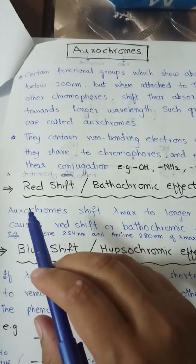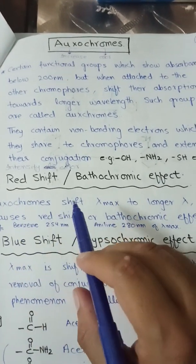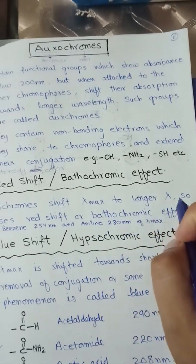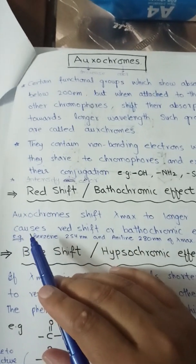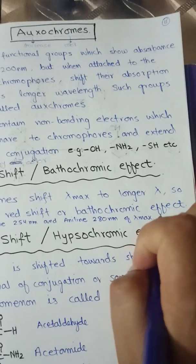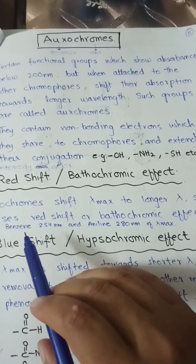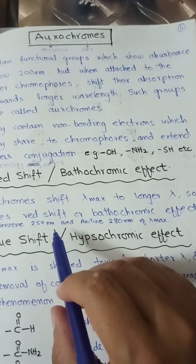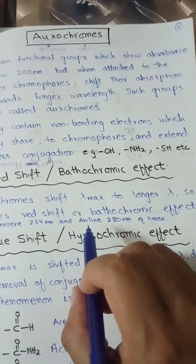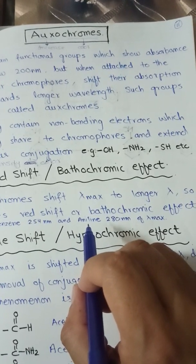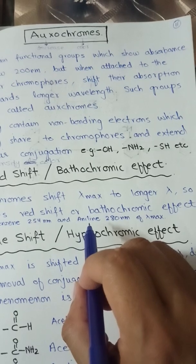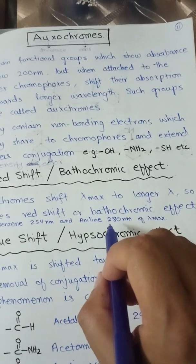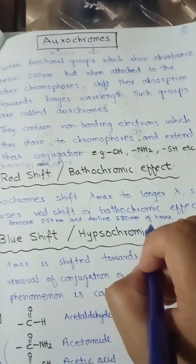When auxochromes shift lambda max to a longer wavelength, it causes a red shift or bathochromic effect. For example, benzene absorbs at 254 nm, but aniline — when the NH2 group is attached as an auxochrome — shifts its wavelength to 280 nm.